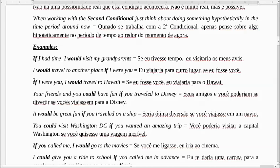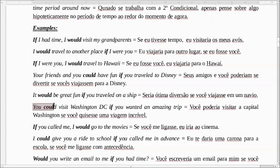Reparem: a única diferença da primeira para a segunda condicional. A primeira era uma coisa real, que realmente aconteceria — era algo certo. Aqui não. Aqui é uma coisa provável, mas não é certeza. It would be great fun if you traveled on a ship. Seria uma ótima diversão se você viajasse em um navio. You could visit Washington, D.C. if you wanted an amazing trip. Você poderia visitar a capital, Washington, se você quisesse uma viagem fantástica.